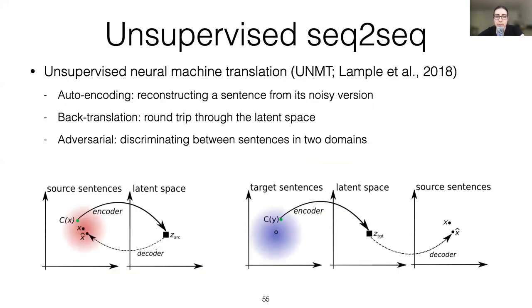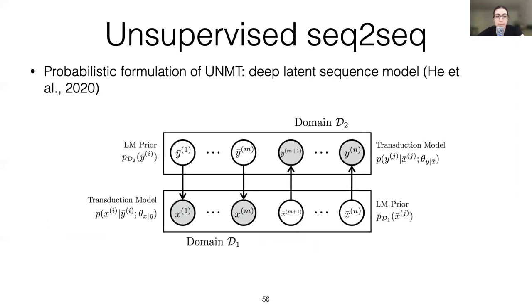Our sequence-to-sequence approach is unsupervised neural machine translation, or UNMT, introduced by Lample et al. It maps both the source and target sequences to a latent space, and is trained to denoise and reconstruct sentences in the same domain, perform back-translation by going through the latent space, and to distinguish between sentences from different domains. We use the probabilistic formulation introduced by Junxian He and colleagues, where the representation of the sentence in another domain is treated as a latent variable that the observed text is conditioned on. In our case, one domain is romanized text and the other is native script text.